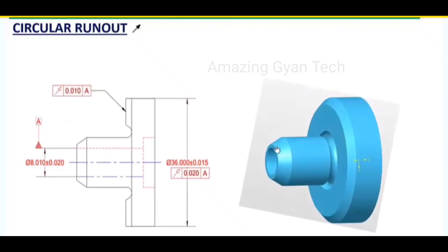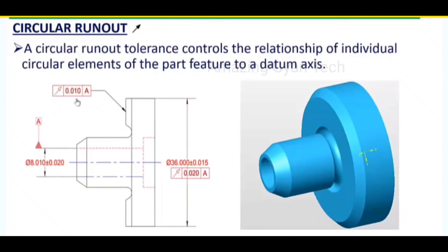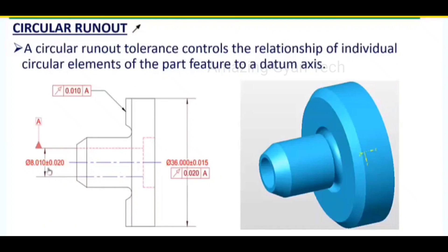Now we will see what is circular runout. In this diagram you can see the feature control frame being applied — a runout symbol is there, a value is there, and a datum reference is also given. Without a datum reference we cannot use circular runout. The main point is the geometric control shape is always a wide tolerance zone, so you will not see a diameter symbol in the second column. The diameter 36 ±0.01 should have a circular runout tolerance within a wide tolerance zone of 0.020 with respect to datum feature A, which is the hole at 8.01 ±0.02.